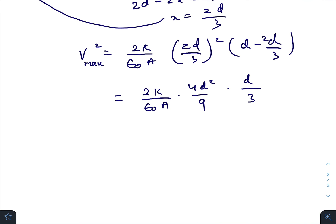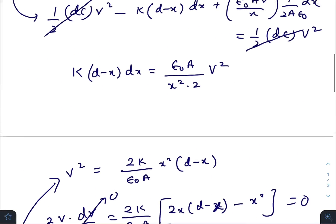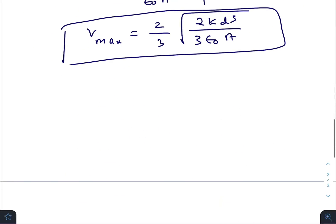The maximum value will be (2/3)√(2KD³/(3ε₀A)). So this will be the maximum value between the two plates. I hope you all have found this video helpful and informative, thank you.